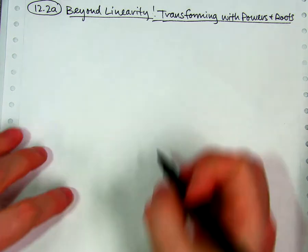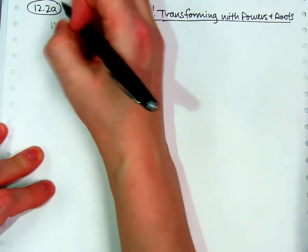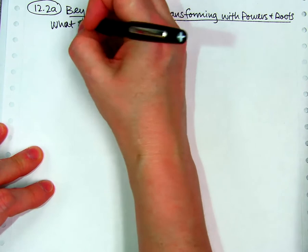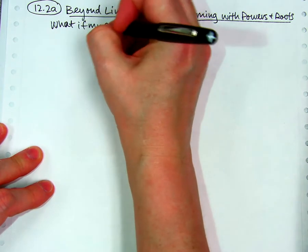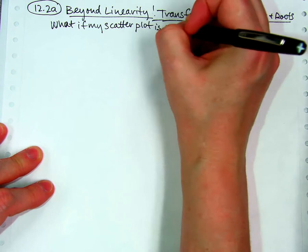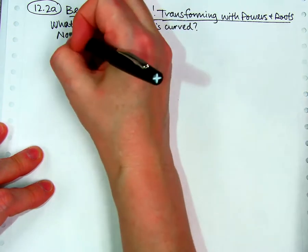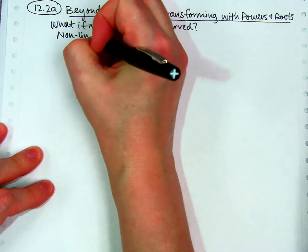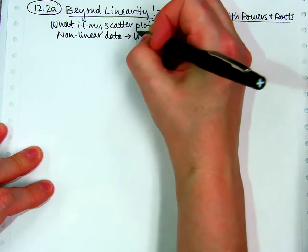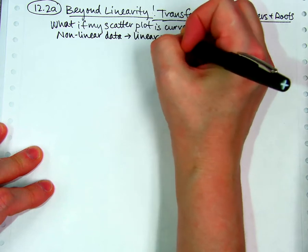So, we are talking about non-linear data. What if we graph this scatter plot and it's curved? We're talking about non-linear data, which means that a linear model that we've been learning how to do doesn't work or is not appropriate for this data.